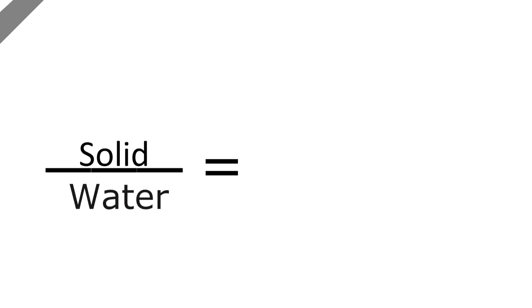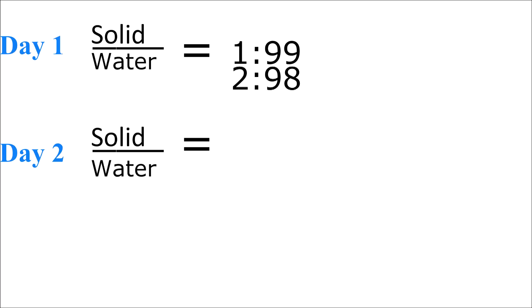If the water decreases to 98% on day two, then the solid accounts for 2% of the weight. Thus the ratio is 2 to 98 for the solid and water. Since the solid cannot increase its weight and the water evaporates from the potato, the ratio 2 to 98 reduces to 1 to 49.